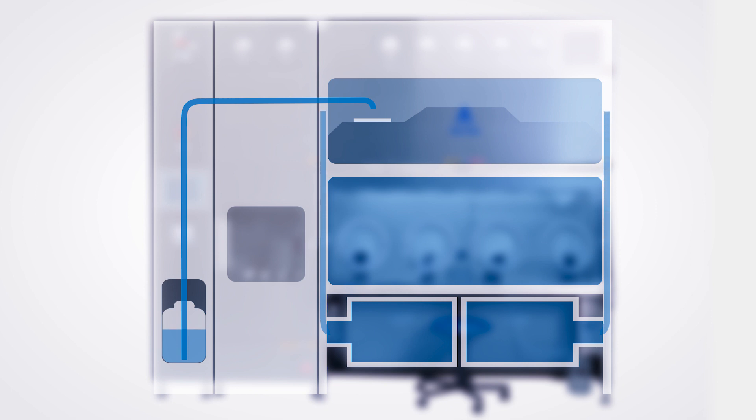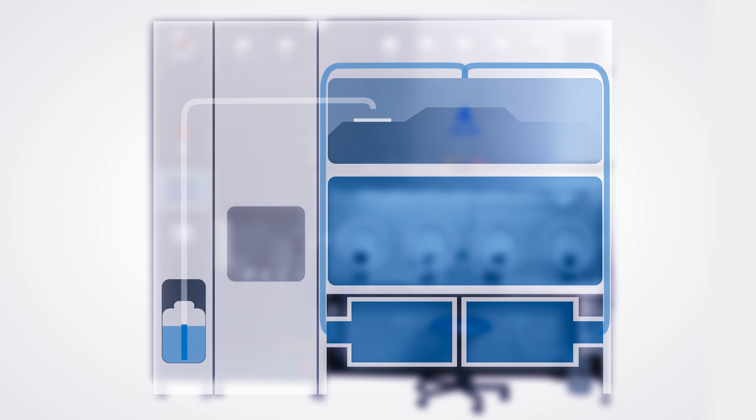Hydrogen peroxide is the most widely used and accepted agent for isolator decontamination. Liquid hydrogen peroxide is pumped from the dosing station to the evaporator, where the liquid is converted into steam by flash evaporation. The steam is taken by the blower and pushed through the HEPA filter into the main chamber, where the hydrogen peroxide is distributed into the load. During the decontamination phase, hydrogen peroxide concentration remains constant, circulated in a closed circuit at low air velocity.